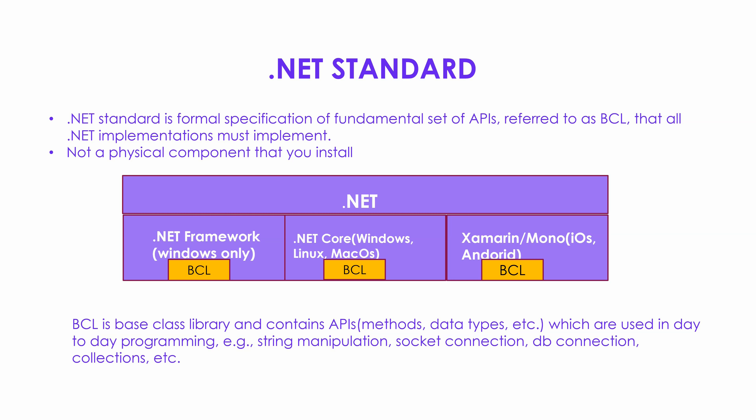The BCL contains APIs which are used in day-to-day programming. For example, as a day-to-day programmer you have to make a database connection or a socket connection, or do some kind of string manipulation — all those kinds of functionalities are implemented in the base class library of .NET. So .NET standard simply specifies what APIs are implemented in a particular .NET runtime version. The .NET standard specifies that the base class library of a particular .NET runtime supports a specific list of APIs. That is what .NET standard is.